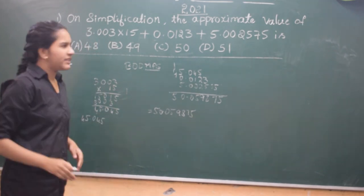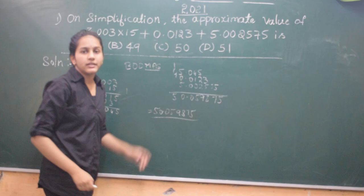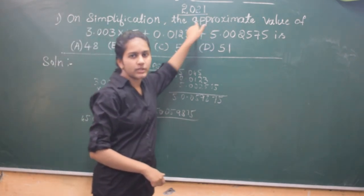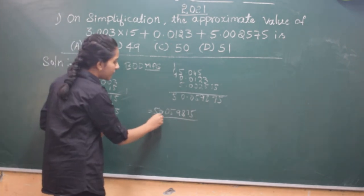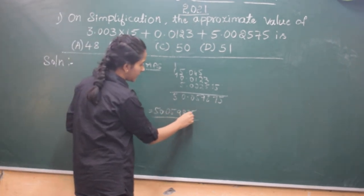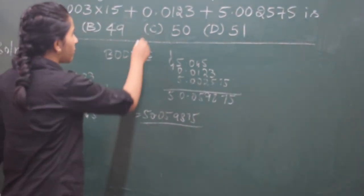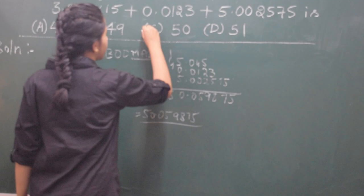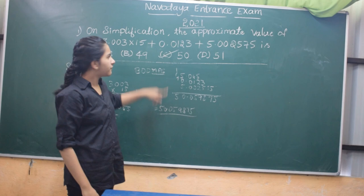But you might be wondering that in the options, we don't have this answer. But in the question they are asking for the approximate value. That means we should estimate this answer to the approximate value. So it's 50.05975. That means it's near to 50, right? We have that option in C. So we should take this as the answer, because they are asking the approximate value. So if you estimate this, you will get it as 50.